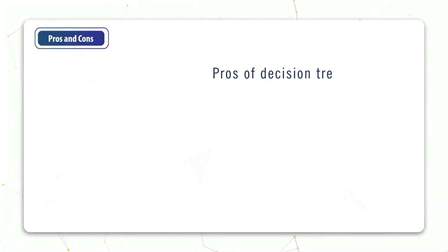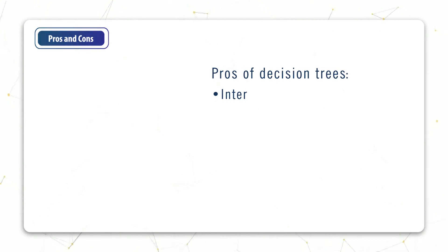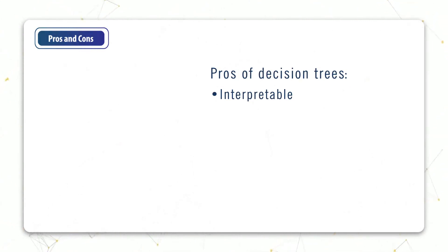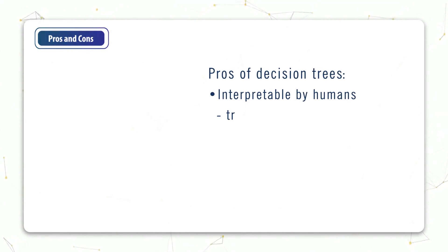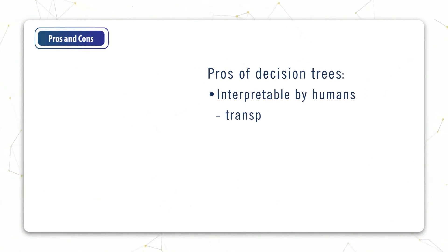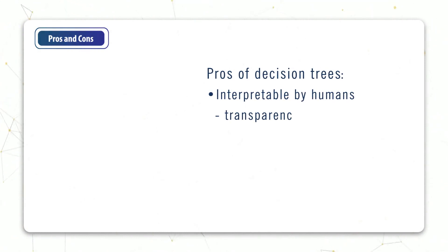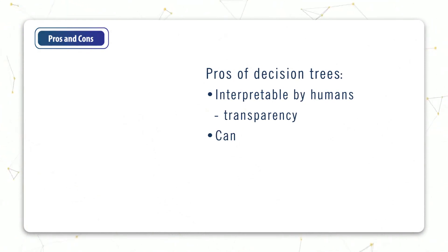In the last video, we saw how to generalize classification trees to include regression trees as well. We also looked at how to handle features that are continuous instead of discrete.